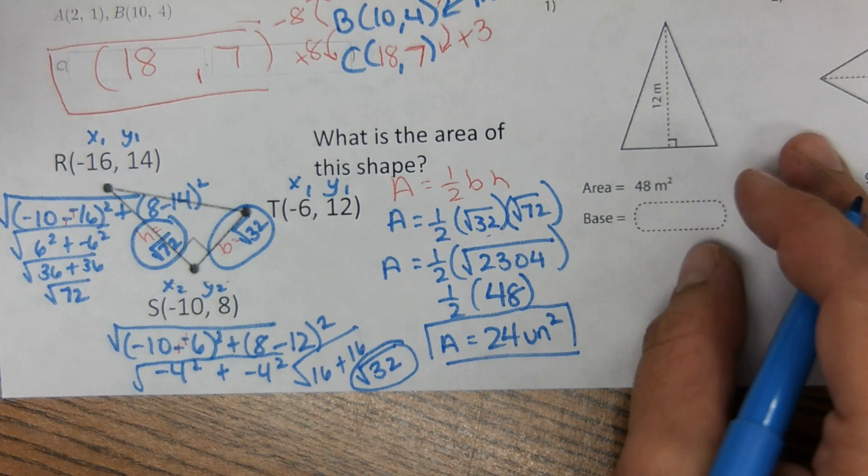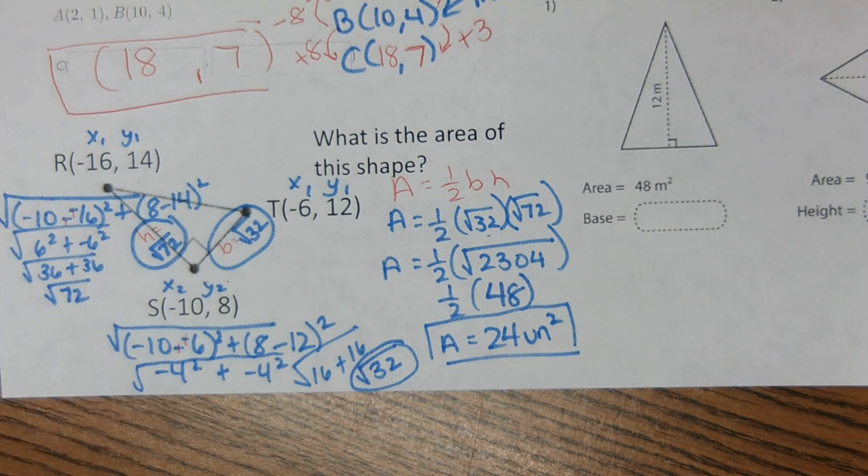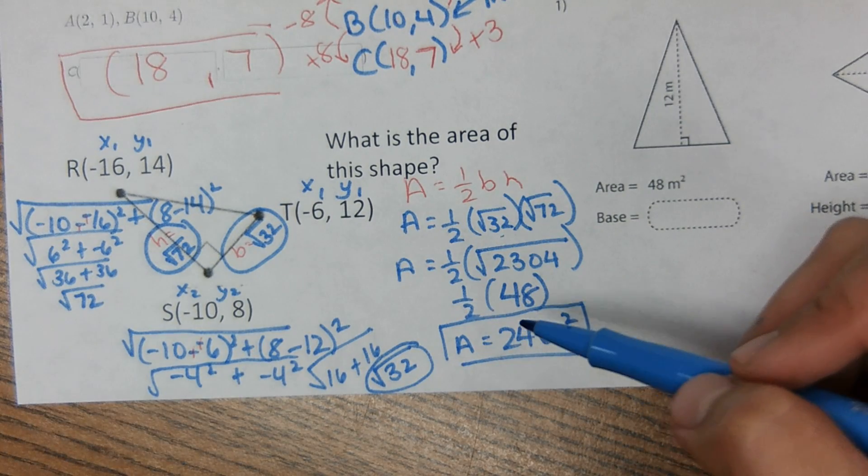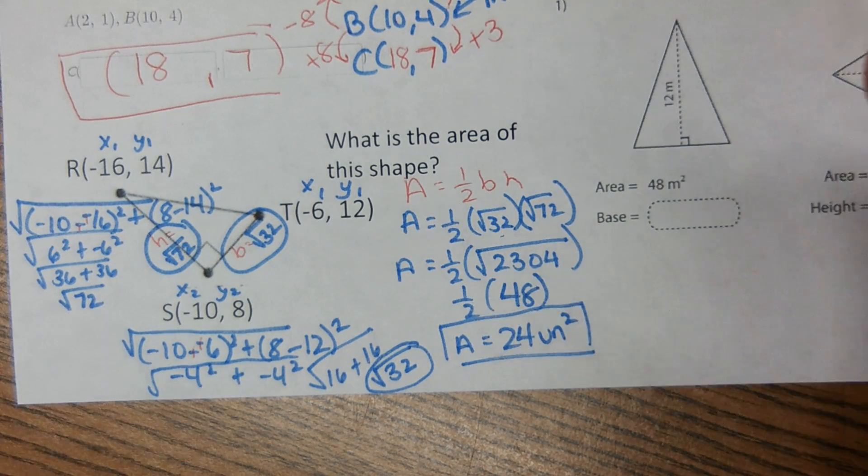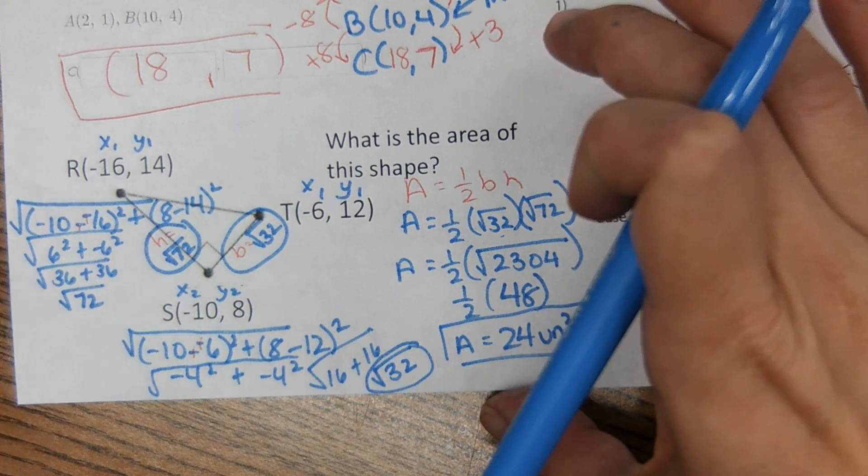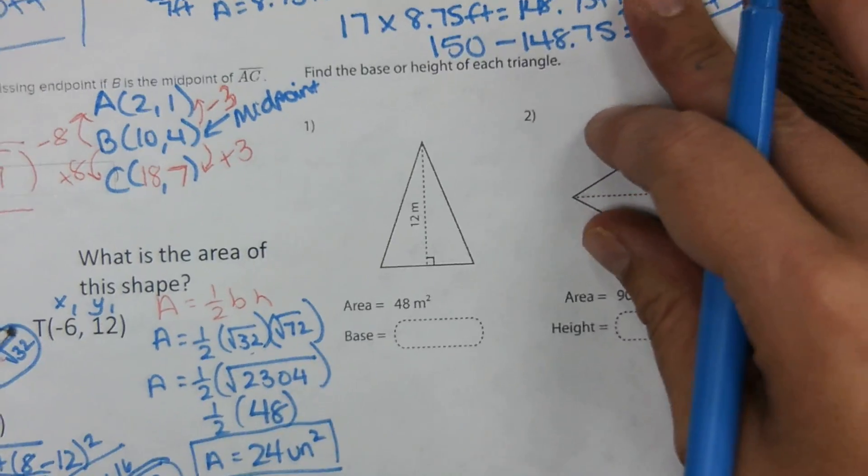Okay so something like this I would save till the end of your test because you're maximizing time in class and you know it's going to take quite a bit of work to get here. So something like this I would skip it and then do it at the end of your test so that way if you miss this one you didn't spend like half the class trying to figure it out.